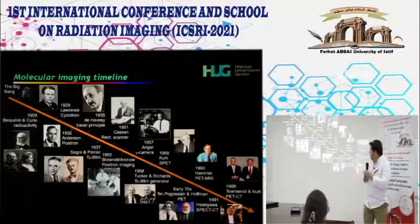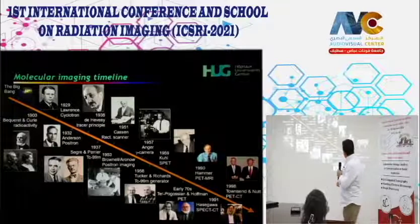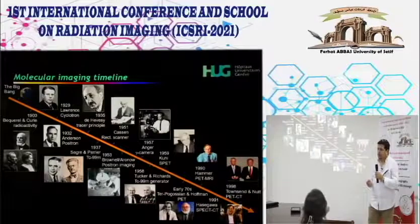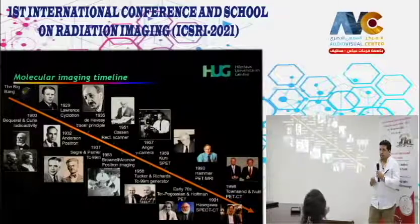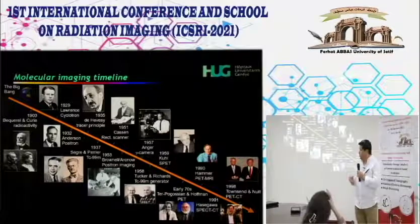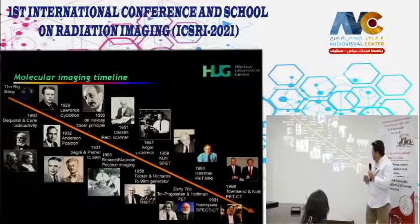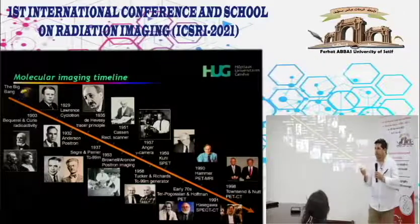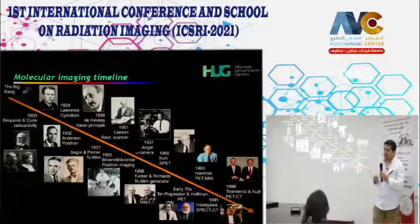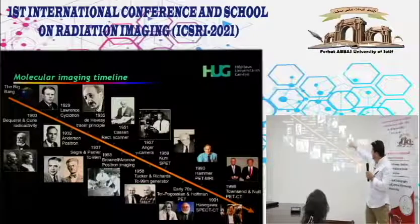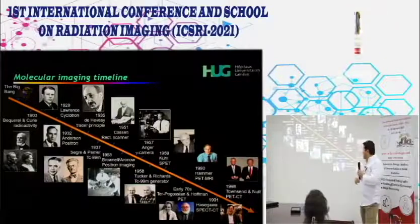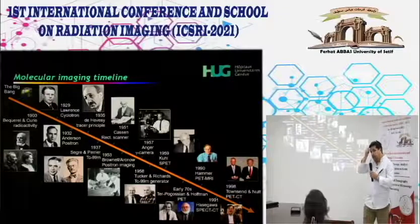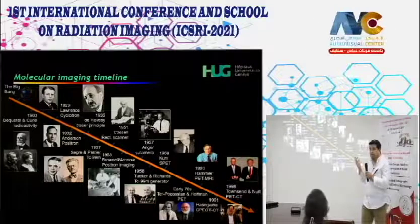Among the pioneers: Lawrence developed the cyclotron—an accelerator used to produce radioactive materials that label biological molecules to make tracers for the clinic. Anderson discovered the positron—without the positron there would be no PET. George de Hevesy, a biochemist and Nobel laureate, is known as the father of nuclear medicine for establishing the tracer principle.